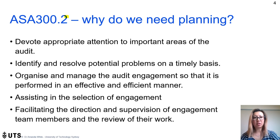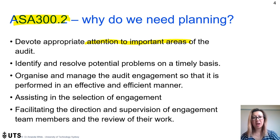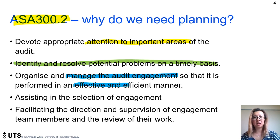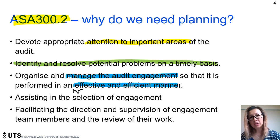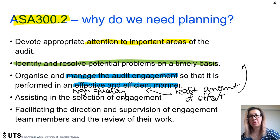ASA 300 gives specific reasons why we need planning. First, to devote appropriate attention to important areas — we want to audit more where there's a greater risk of misstatement. Second, to identify and resolve potential problems on a timely basis, finding issues upfront rather than at the very end close to the reporting period. Third, to manage the engagement so it's performed in an effective and efficient manner — effective means high quality, and efficient means doing it with the least amount of effort.